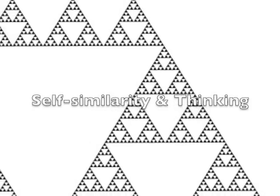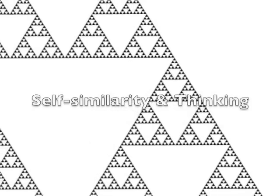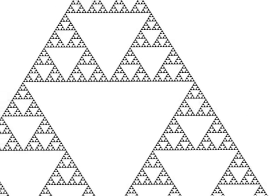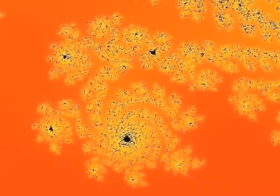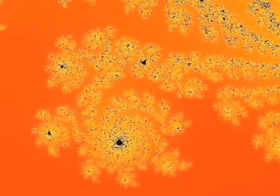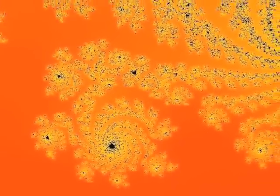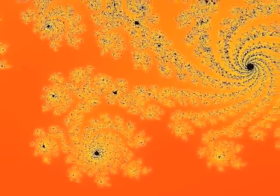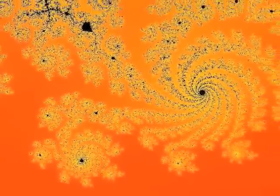Systems are self-similar when the structure of their parts is similar to the structure of the whole. This independence from the scale of view occurs whenever the same simple rules are applied across scales.